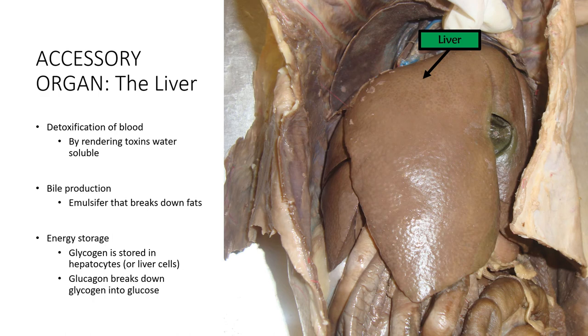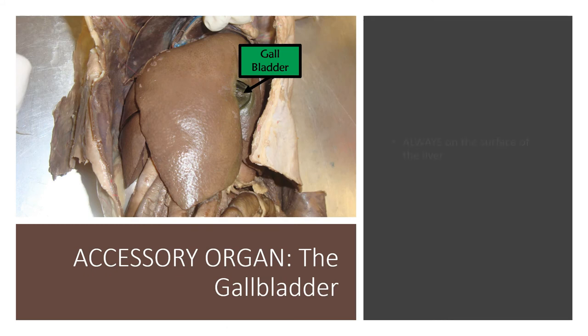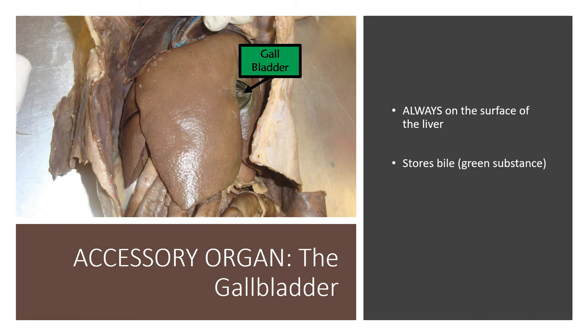The liver is also involved in energy storage — glycogen is stored in the hepatocytes, or liver cells, and glucagon is a hormone that breaks down glycogen in the hepatocytes into glucose. The gallbladder is always on the surface of the liver because it stores the bile the liver produces. Bile is a green substance, so the gallbladder sometimes looks green; the best way to identify it is to look for a blister on the surface of the liver. It releases bile into the common bile duct and into the duodenum of the small intestine.